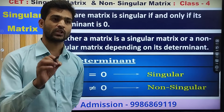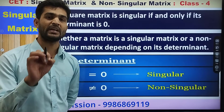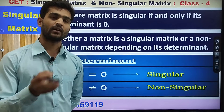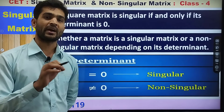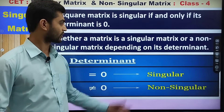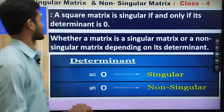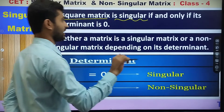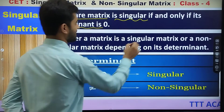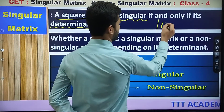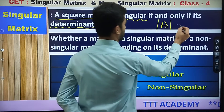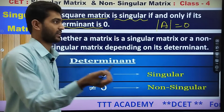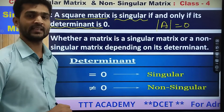If you are going to solve the determinant, if the value of the determinant is equal to 0, that type of matrix is going to be called a singular matrix. A square matrix is singular if and only if its determinant is 0. So if you take any matrix A and the determinant of A is equal to 0, then A is a singular matrix.